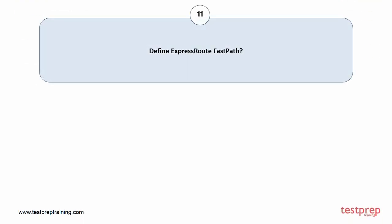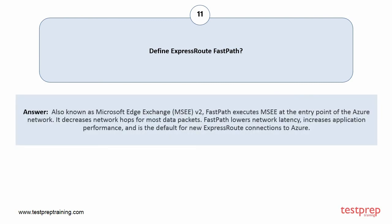Question number eleven: Define ExpressRoute Fast Path. Also known as Microsoft Edge Exchange v2, Fast Path executes MZ at the entry point of the Azure network. It decreases network hops for most data packets. Fast Path lowers network latency, increases application performance, and is the default for new ExpressRoute connections to Azure.